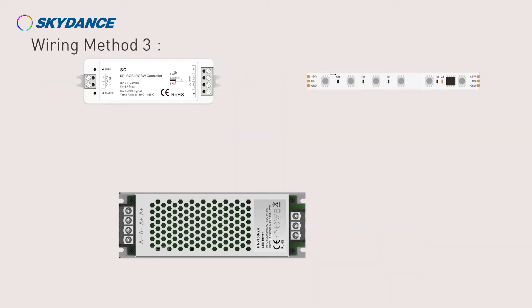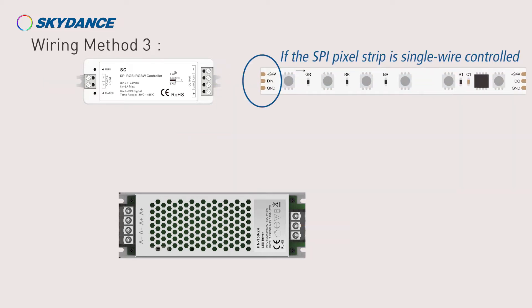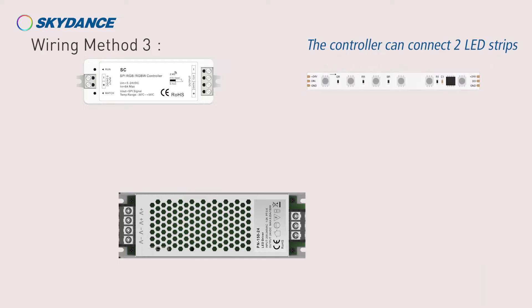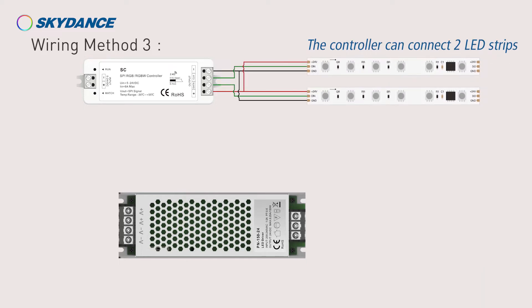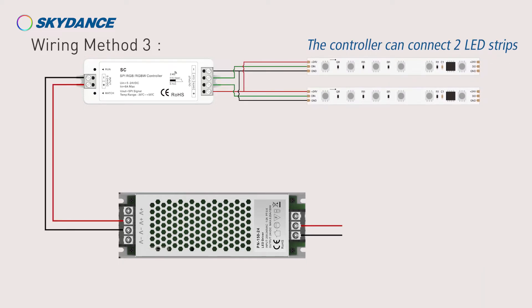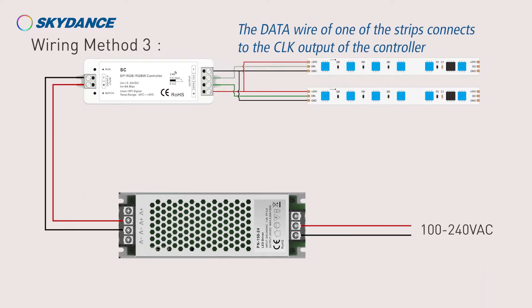Wiring method 3: if the SBI pixel strip is single-wire controlled, the controller can connect to LED strips. The data wire of one of the strips connects to the CLK output of the controller.